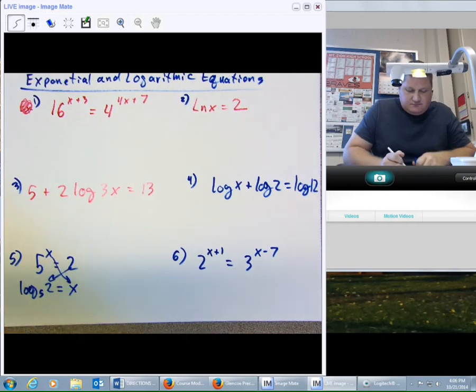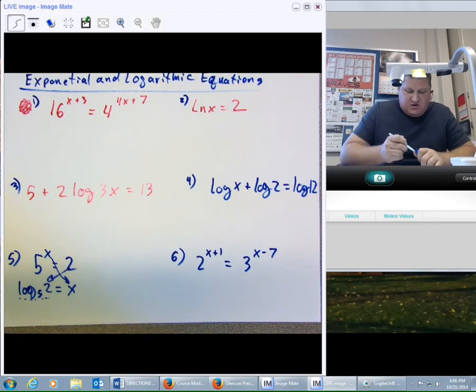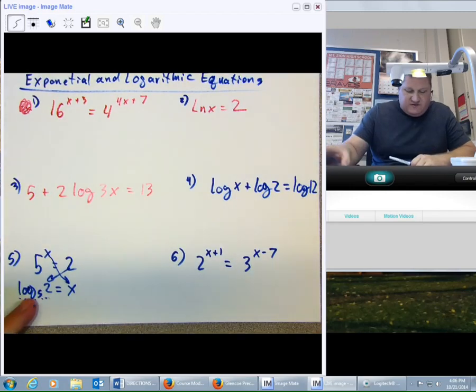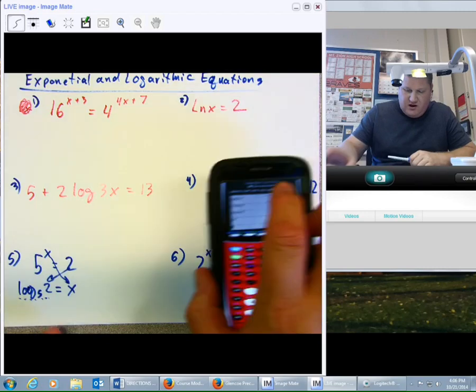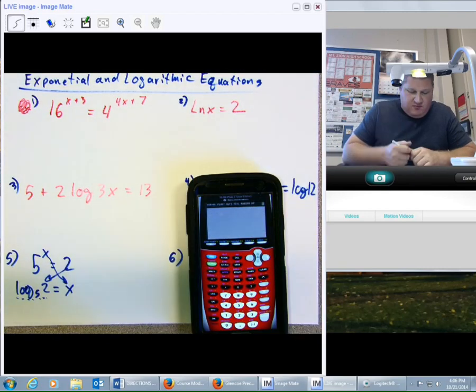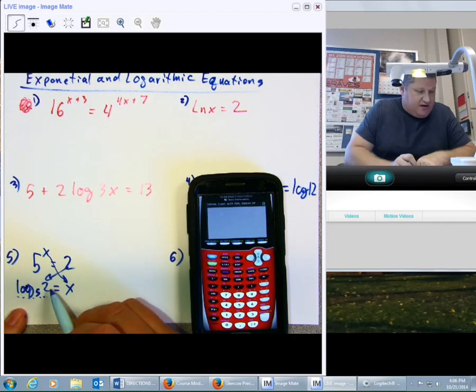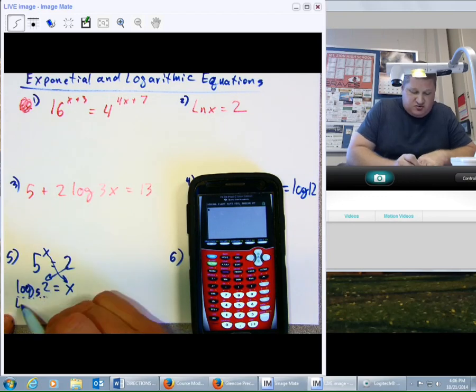And so now I have this thing right here. We say, so what? Well, you'll notice the variable is by itself, and with the variable by itself, then I can use my calculator to solve all the problems. So, if I come over here and I say log base 5 of 2, the problem is I don't have the base 5 button, so I'm going to have to use my change of base.